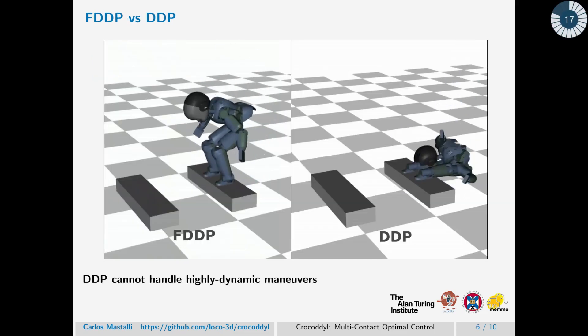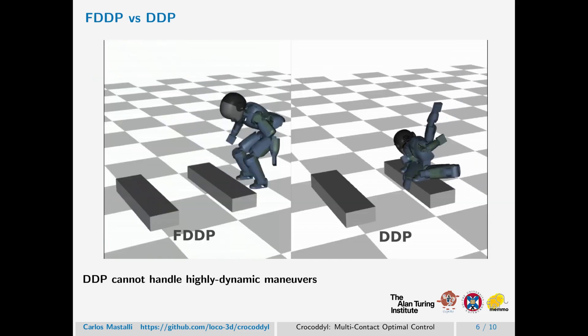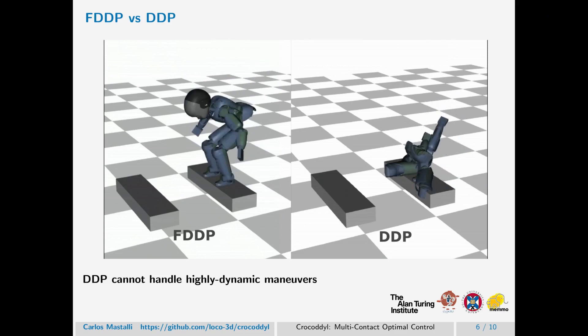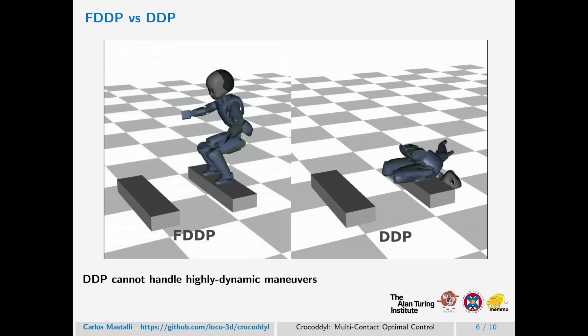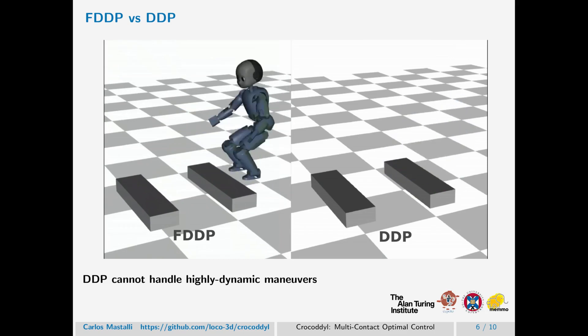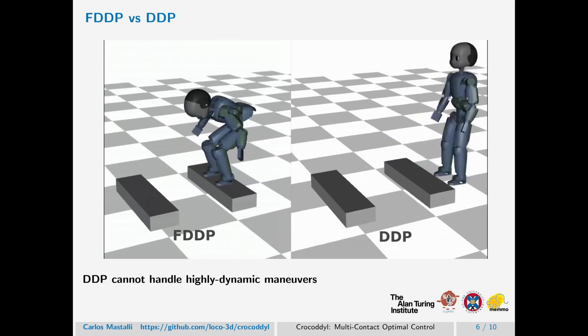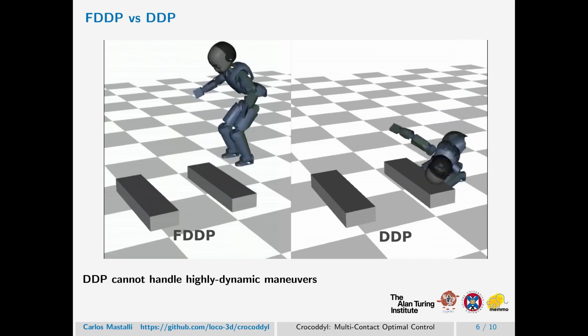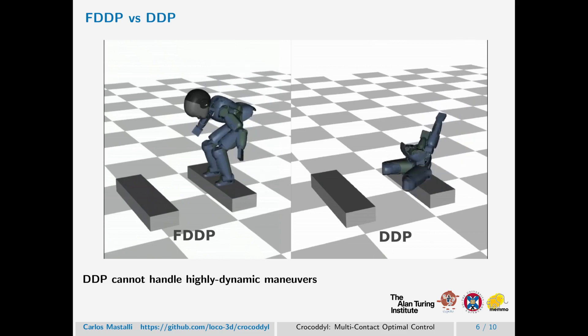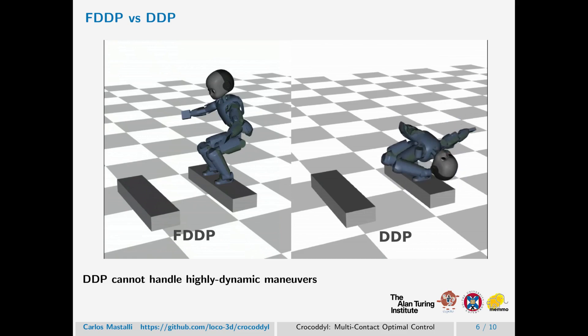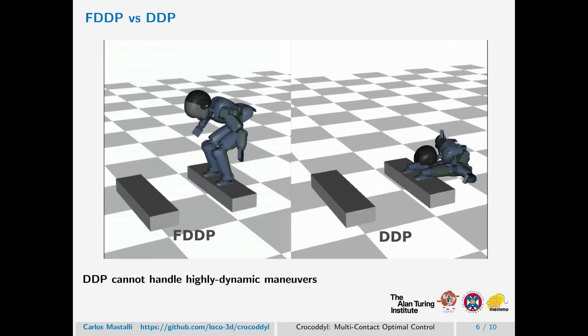And we inspect the problem with the DDP algorithm in this slide. As you can see here, DDP struggles to find a solution to this problem with the HyQ humanoid robot. And this is due to the fact that the DDP is iterating around an unstable trajectory. On the other hand, the infeasibility that the FDDP keeps allows the solver to iterate around a better guess.